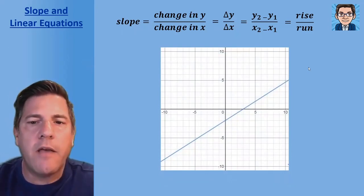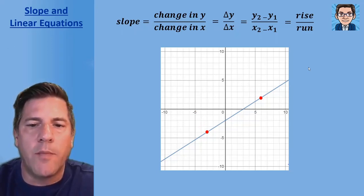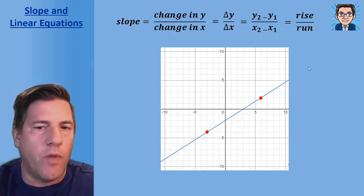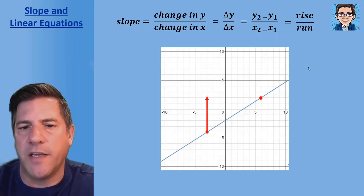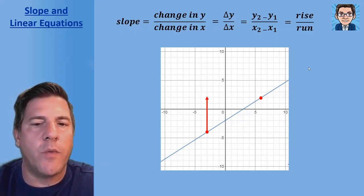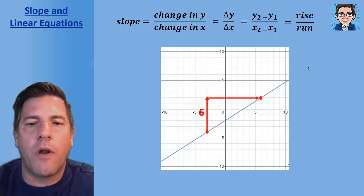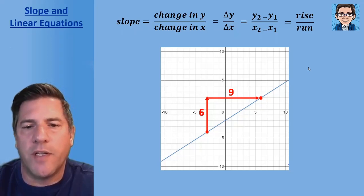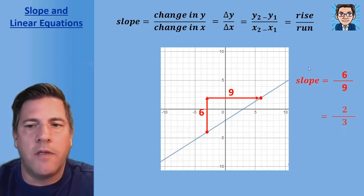On a graph, we take two points that you can figure out where they are — see those two points cross right at whole numbers. Then we want to see how much y changes, or how much the rise is. To go from one point to the other we go up by six, and then we go over by nine. So the rise over the run is six over nine, which reduces to two thirds.